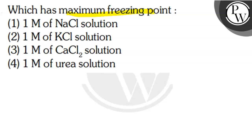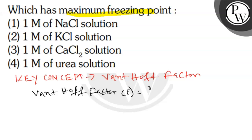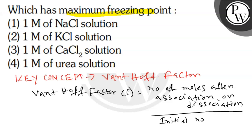The key concept here is the Van't Hoff factor. The Van't Hoff factor, denoted as i, is defined as the number of moles after association or dissociation divided by the initial number of moles.